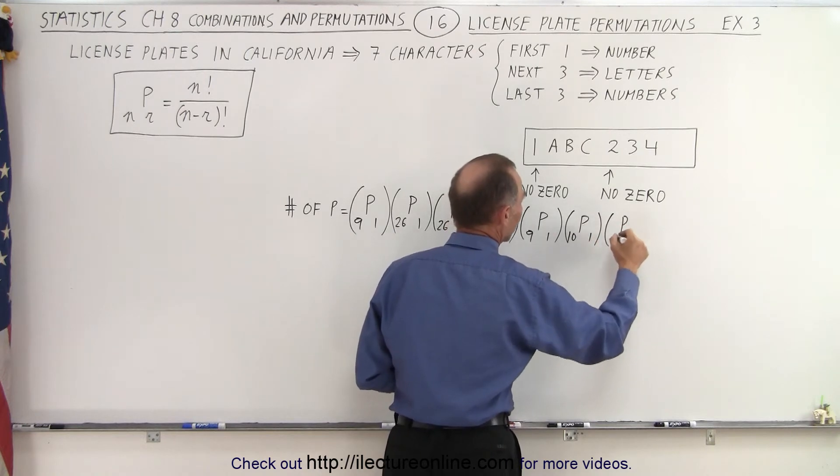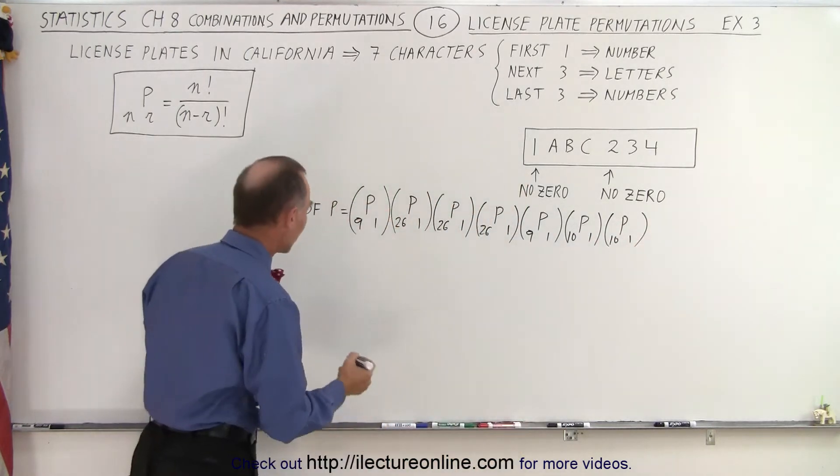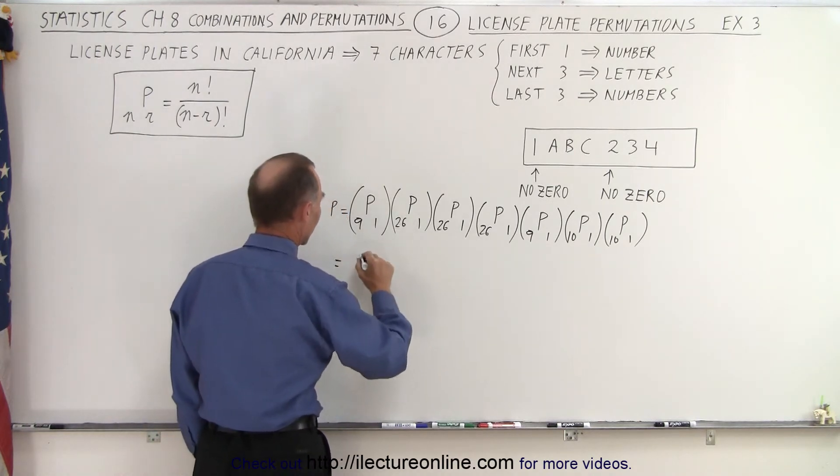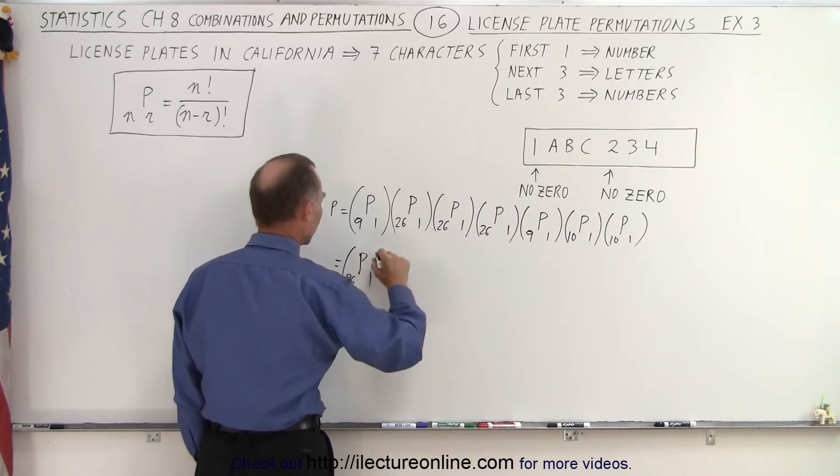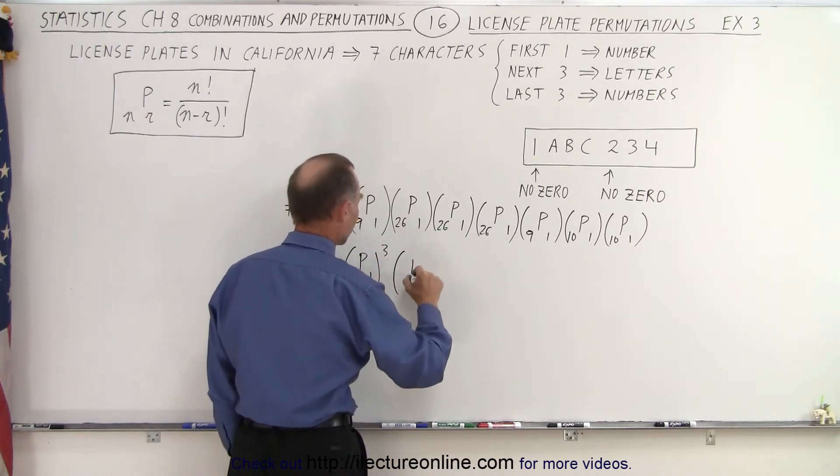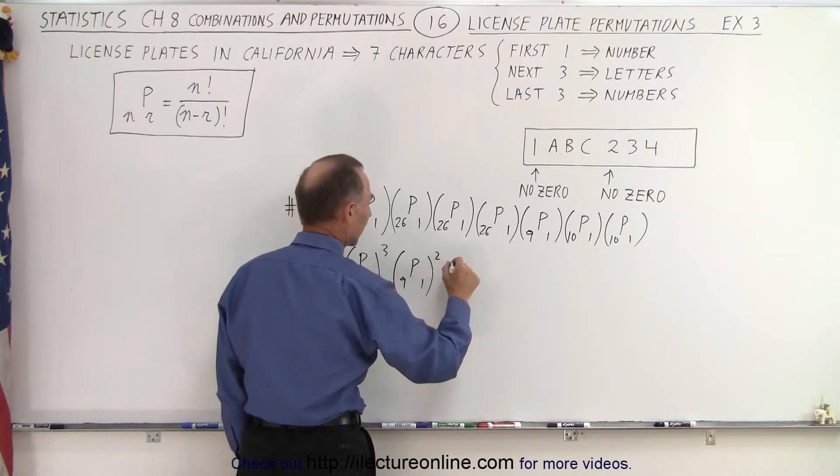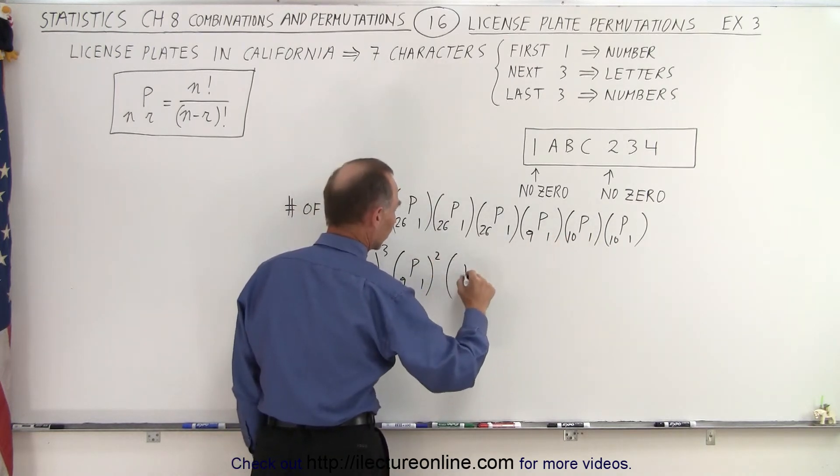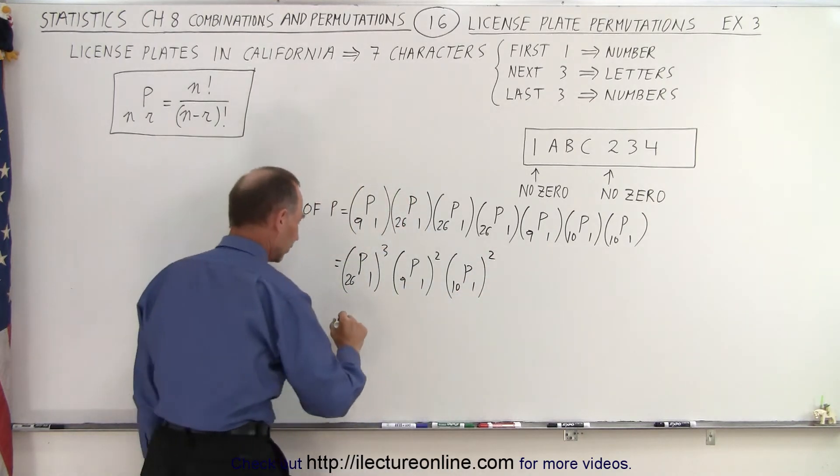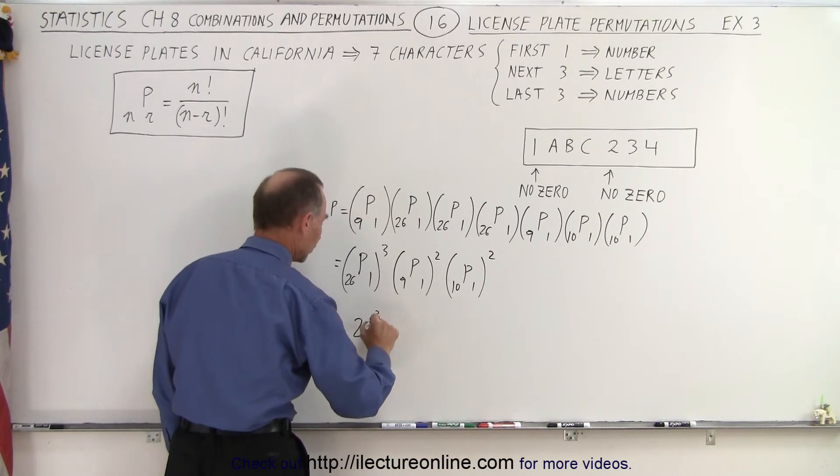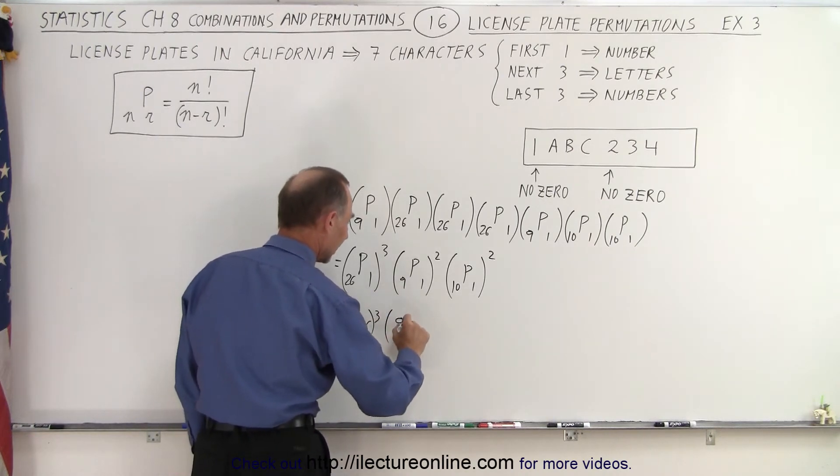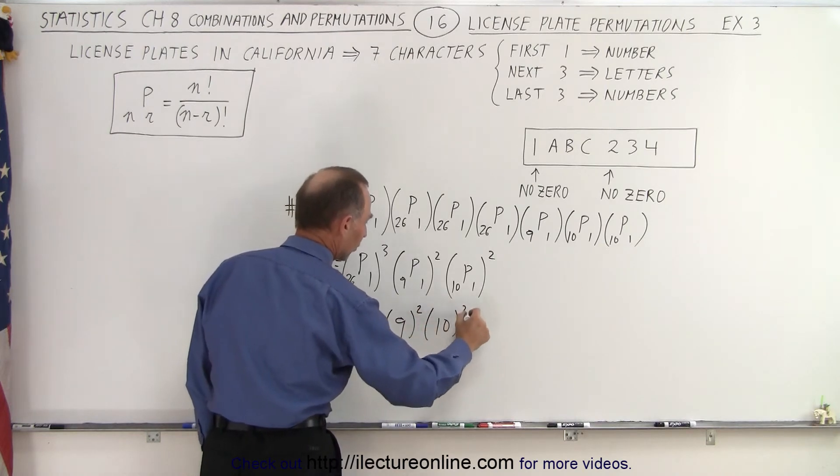And so that's what the equation is going to look like. And so simplified, we can say that this is equal to, we have three of these, so P(26,1) to the third power, we have two of those, so that would be P(9,1) to the second power, and then we have two of those, which is P(10,1) to the second power. All right, so this becomes equal to 26 cubed, times 9 squared, times 10 squared.